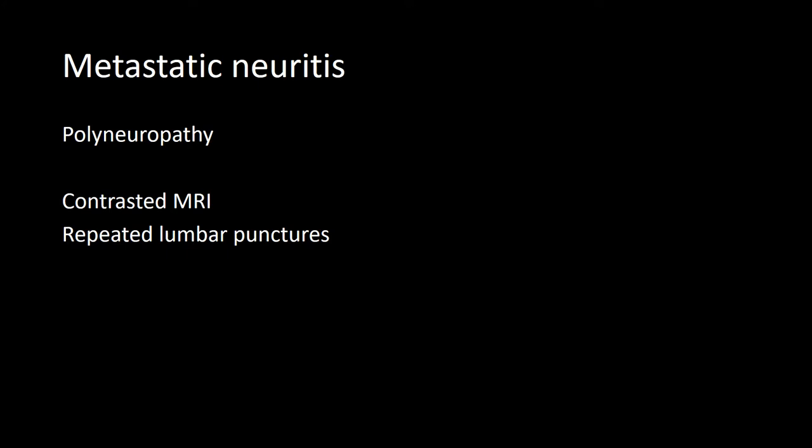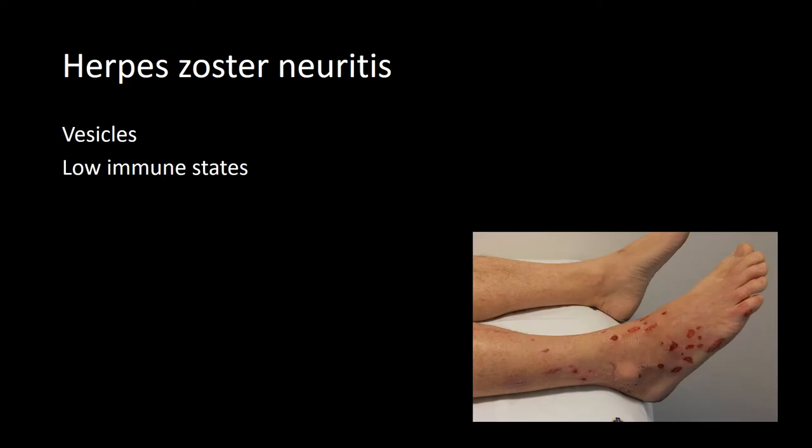Metastatic neuritis can also present with leg pain. Typically on examination there is a polyneuropathy, and when this is suspected a contrast-enhanced MRI scan should be used, which generally shows increased uptake around the nerve roots. This may require repeated lumbar punctures to identify metastatic cells on cytology. Herpes zoster neuritis may present in a dermatomal fashion, often preceded by severe radicular pain with the appearance of vesicles a few days later. This typically occurs in low immune states such as following chemotherapy, HIV, or general malnutrition.